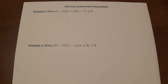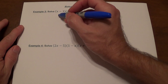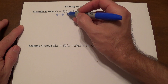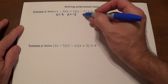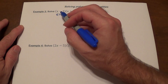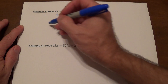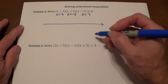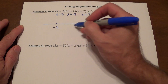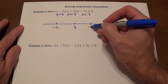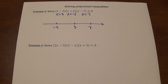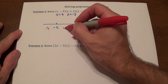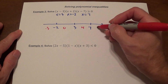Let's look at the next example. You should recognize there will be three numbers: three, negative two, and seven — the values that make each factor zero. Three points means four intervals on the number line. We plot negative two, three, and seven. We'll pick negative three, zero, four, and eight as test points for each interval.